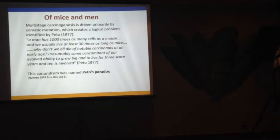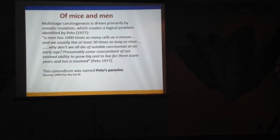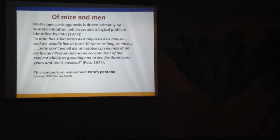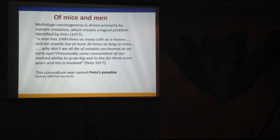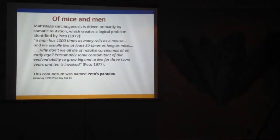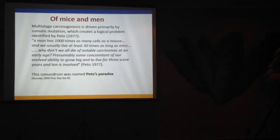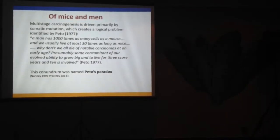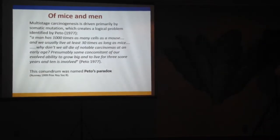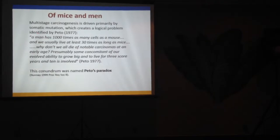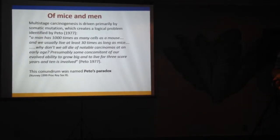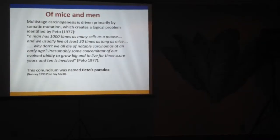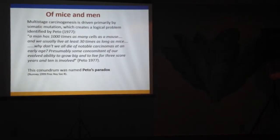There's an interesting logical problem with multistage carcinogenesis, captured by Richard Pitot in 1977. Multistage carcinogenesis is driven primarily by somatic events — and if you are bigger and longer-lived, there's more opportunity for bad somatic events to occur. As he pointed out, we're a lot bigger than mice and we live a lot longer than mice, so why don't we get a lot more cancer than mice? I christen this thing Pitot's Paradox.